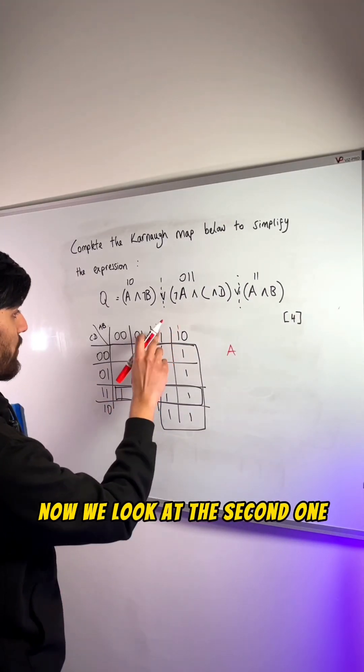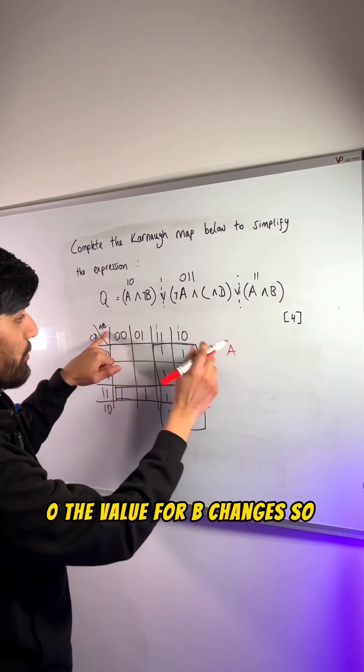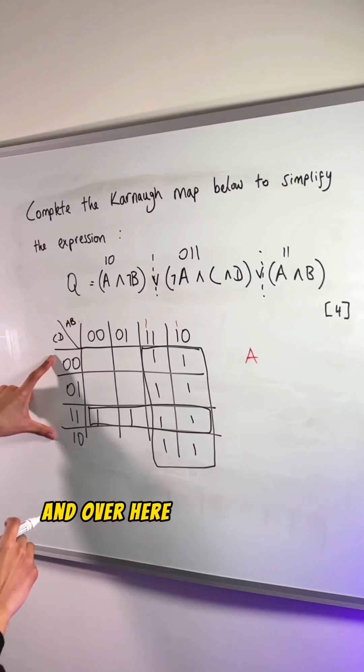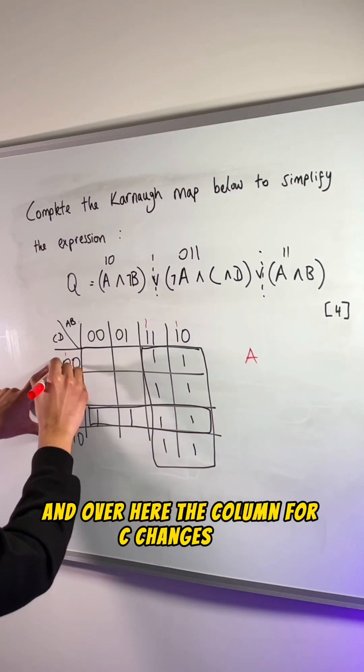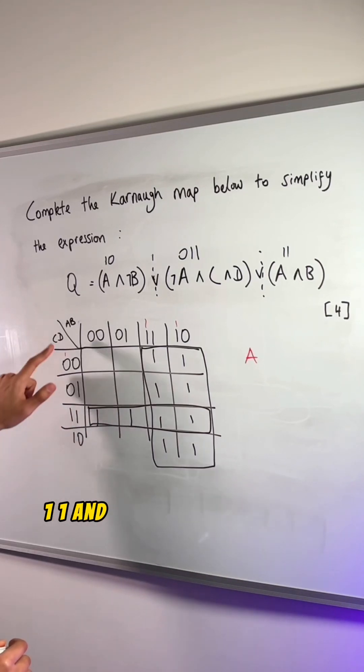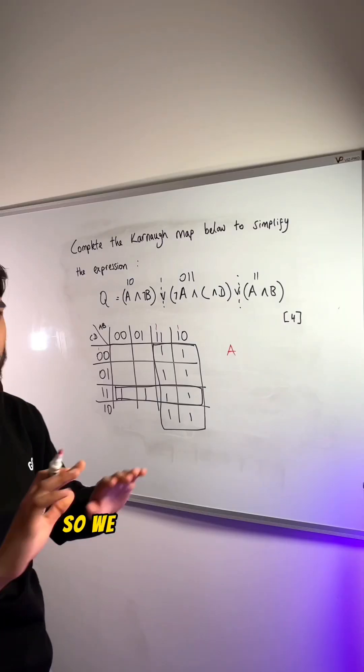Now we look at the second one, which is 1, 0. The value for B changes, so we don't write that down. And over here, the column for C changes, 0, 0, 1, 1. And even the column for D changes, so we don't write it down.